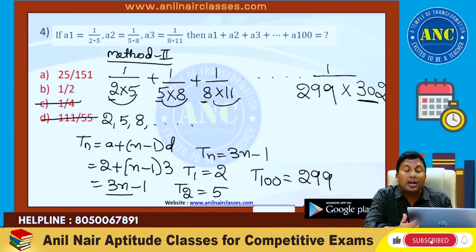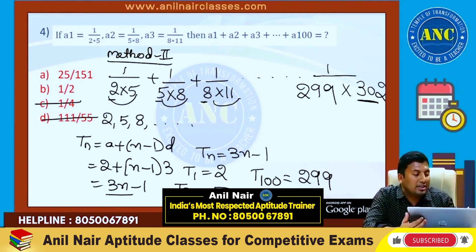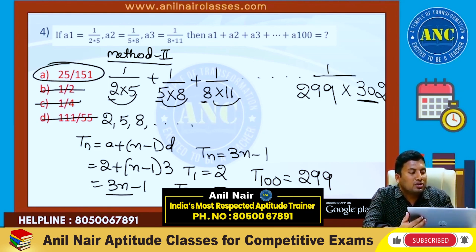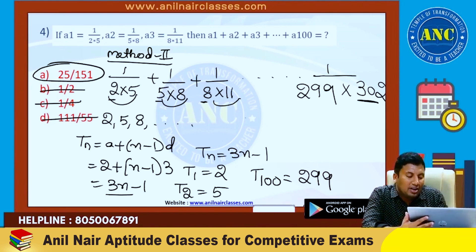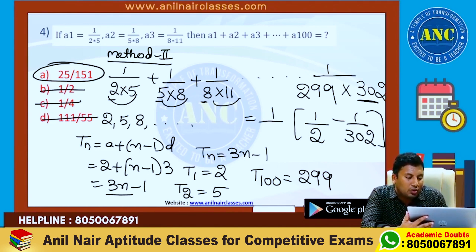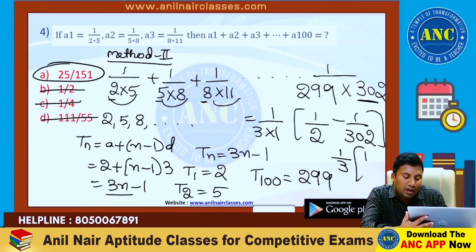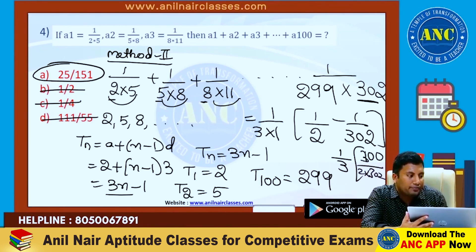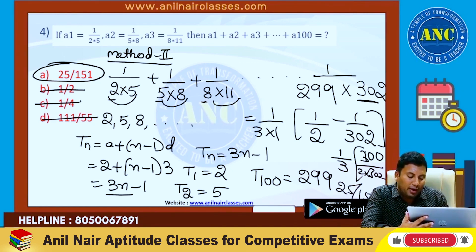Some options are eliminated. 1 by 2 is 50 percentage — not at all possible. So 25 by 151. The answer is: write down the first term as well as the last term. 1 by 2 minus 1 by 302. With common difference factor 1 by 3, this is nothing but 1 by 3 into (302 minus 2), giving 300 divided by 302, so from there the answer is nothing but 25 by 151.